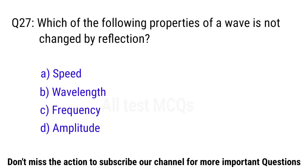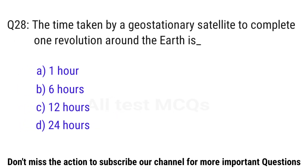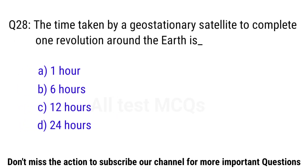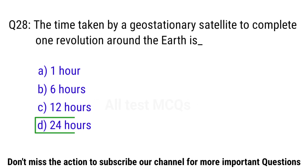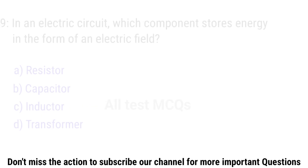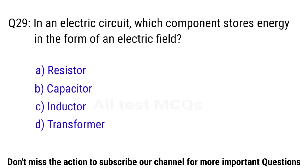Q28. The time taken by a geostationary satellite to complete one revolution around the earth is? The right answer is option D. 24 hours. Q29. In an electric circuit, which component stores energy in the form of an electric field? The right answer is option B. Capacitor.